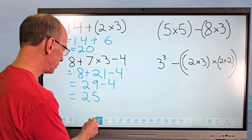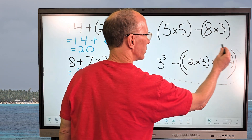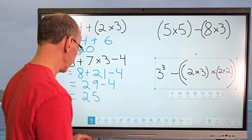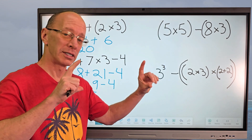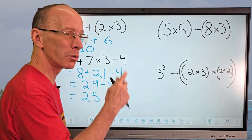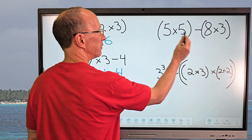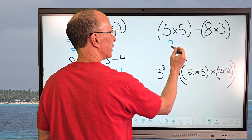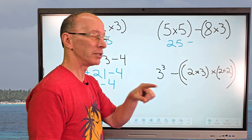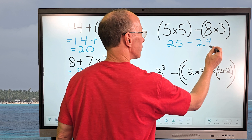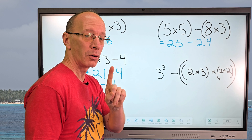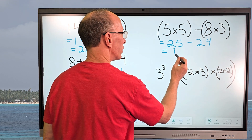Let me move this problem so I have room to work. I need to do what's inside parentheses first, and I see two sets of parentheses — no problem, we just do one at a time. 5 times 5 equals 25, and 8 times 3 equals 24. Then I subtract: 25 minus 24 equals 1, so the answer is 1.